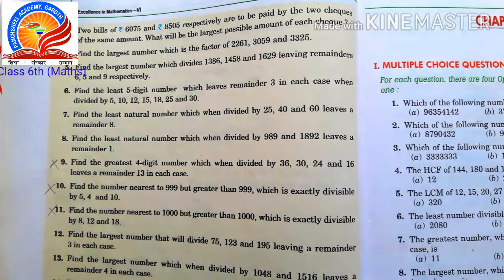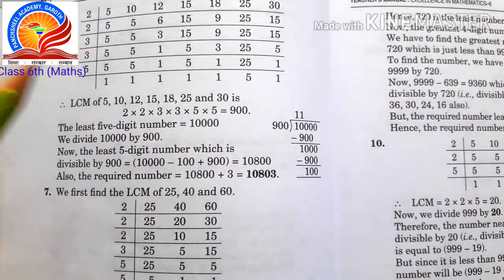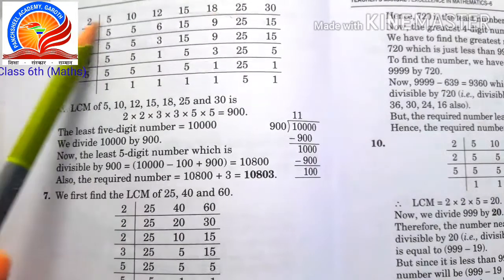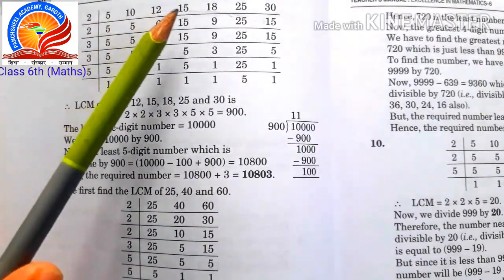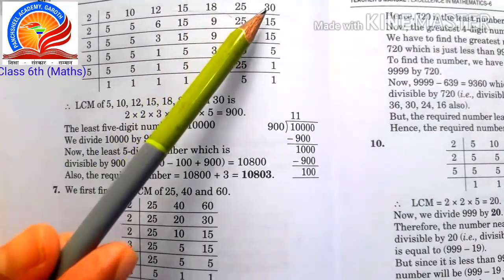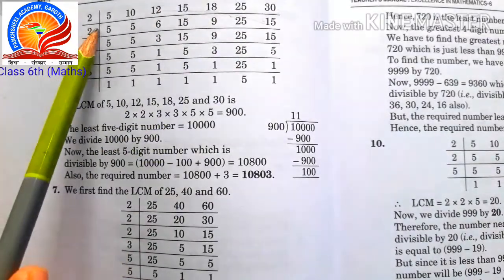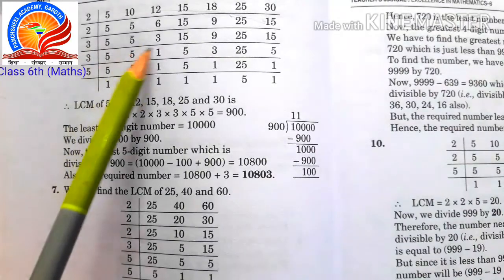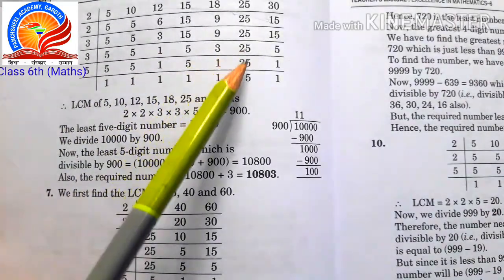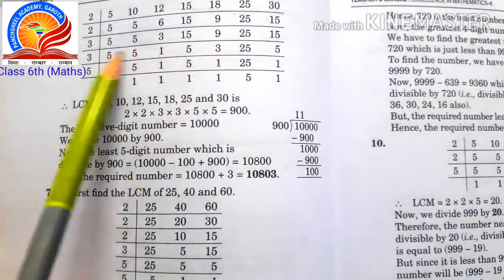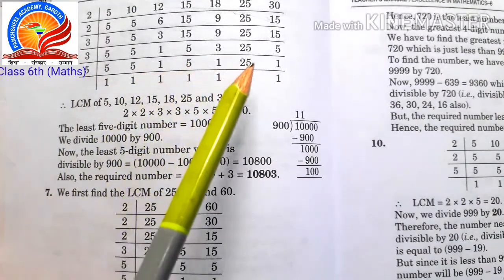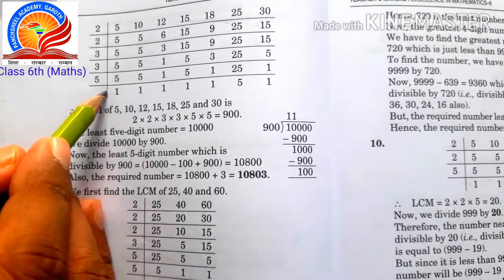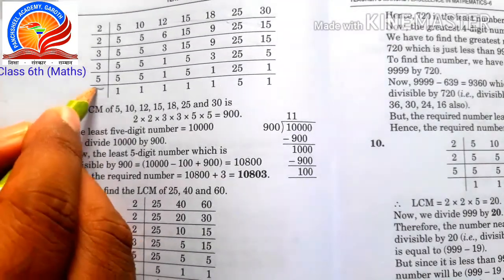The numbers are 5, 10, 12, 15, 18, 25, and 30. We find the LCM: 5, then 10 gives 5×2, 12 gives 6×2, 15 gives 15, 18 gives 9×2, 25 gives 25, and 30 gives 15×2. After working through the prime factors — 2 times, 3 times, 5 times — we get LCM = 900, which is not yet a 5-digit number.